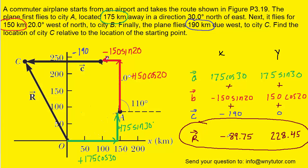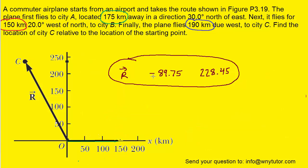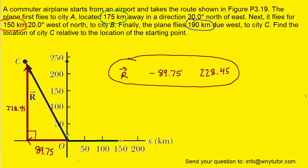When you do that, you should get results for the X and Y components of the resultant. Returning to the diagram, the X component was negative 89.75 — so we project a vector in the negative X direction of about that magnitude. The Y component was positive 228.45, so we project a vector straight up. Notice that the components form a right triangle with the resultant, where the X component is one side and the Y component is the other.